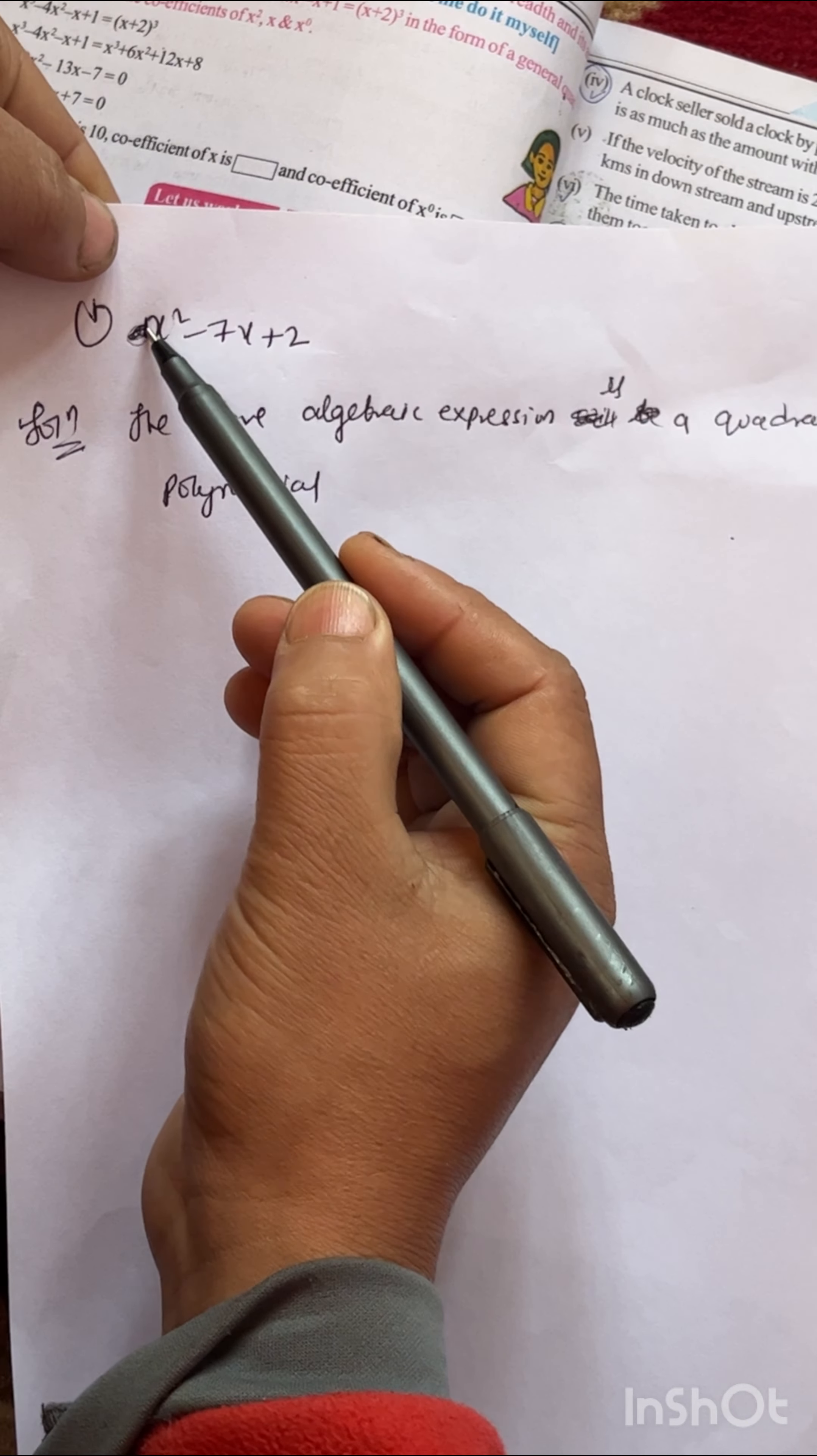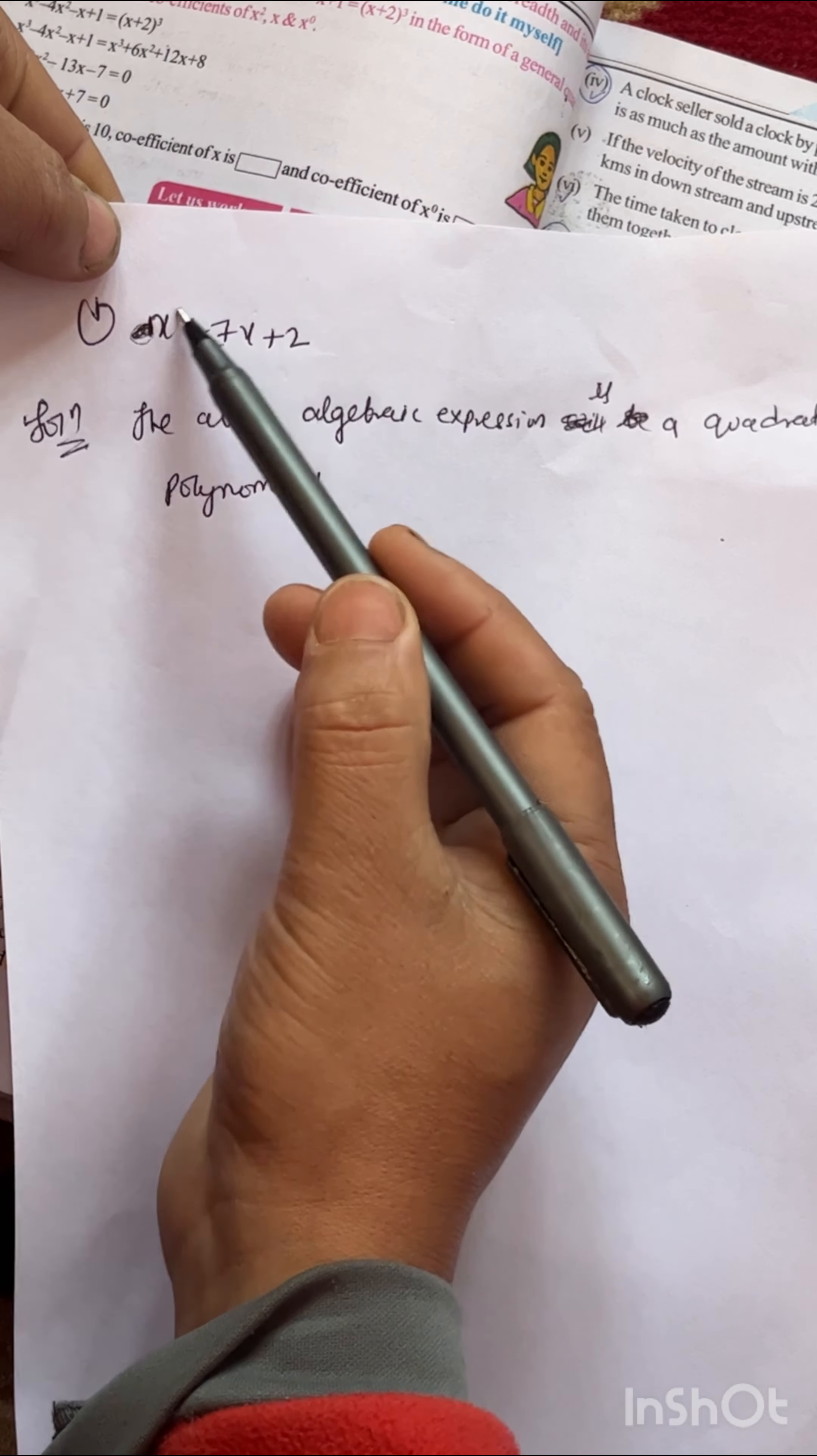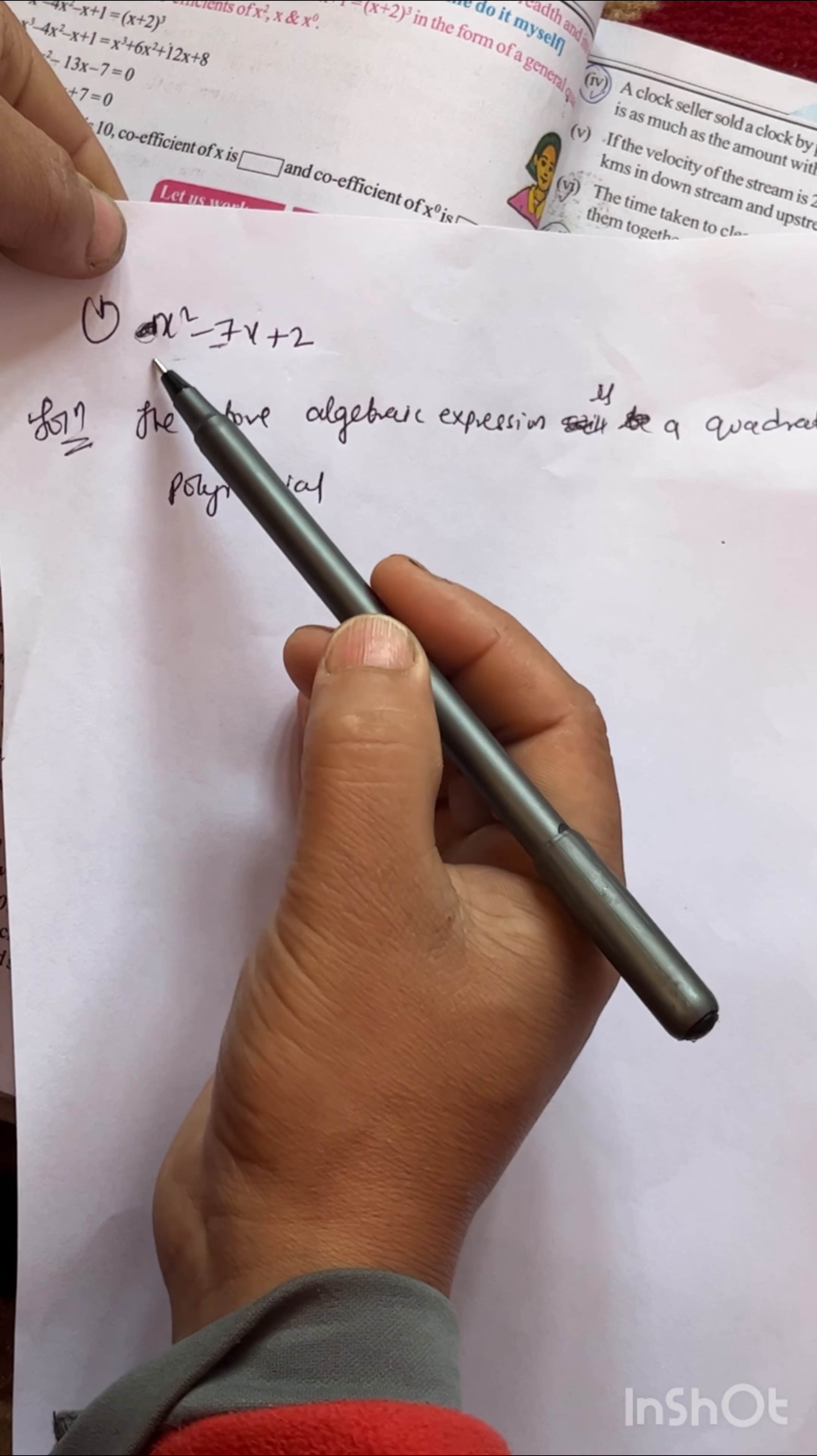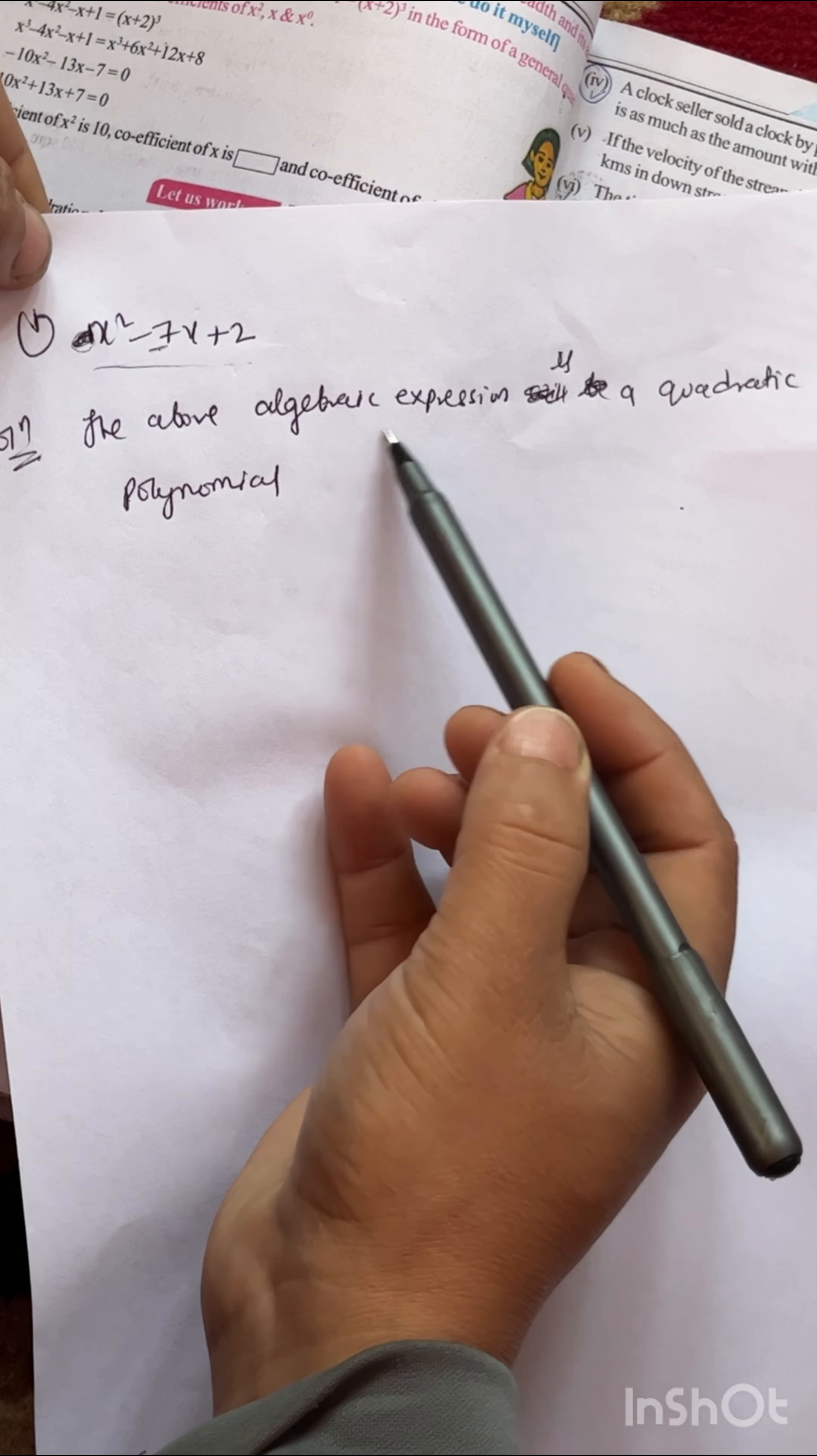Here a = 1, b = -7, c = 2. And since we have the equals to zero, we can say this is a quadratic equation. The algebraic expression is a quadratic polynomial.